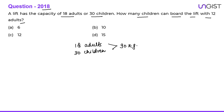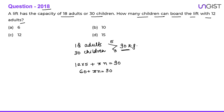Assume the carrying capacity of the lift is 90 kg. If 18 adults weigh 90 kg total, then one adult weighs 5 kg. Similarly, if 30 children weigh 90 kg, then one child weighs 3 kg. The question asks how many children can board with 12 adults. So: 12 × 5 = 60 kg used by adults. Let n be the number of children. Then 60 + 3n = 90, so 3n = 30, giving n = 10.